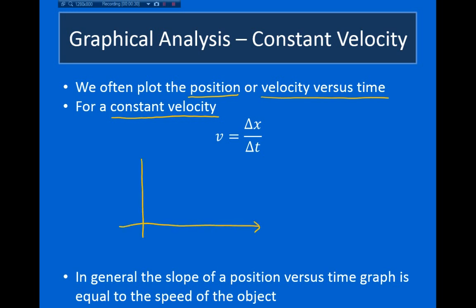If we consider the position versus time graph, remember velocity is change in position over change in time. Looking at this graph, position is on the y-axis and time is on the x-axis. So change in position over change in time is change in y over change in x, and that's equal to the slope.